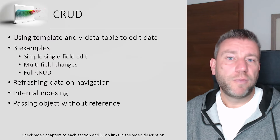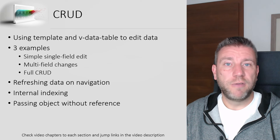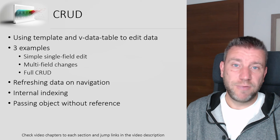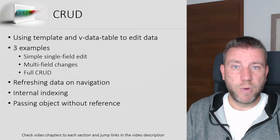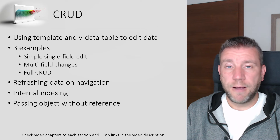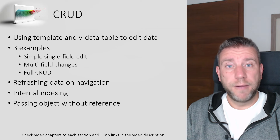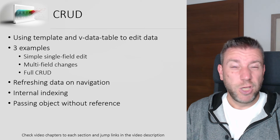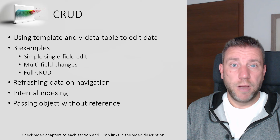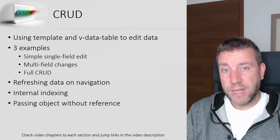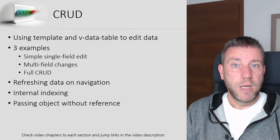Today we are going to use Node-RED Dashboard 2.0, the UI template node, and specifically a V data table to show the data. I'll enhance the V data table with controls to change values and buttons to create, update, and delete data. I'm going to go through three specific examples — the first I already showed in my tables video, the second adds multiple field types, and the third is the full CRUD example with user access.